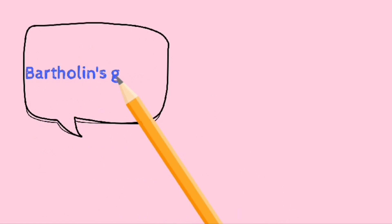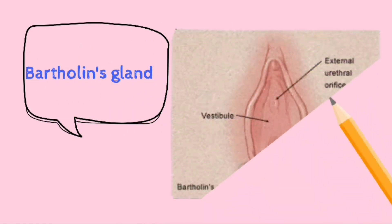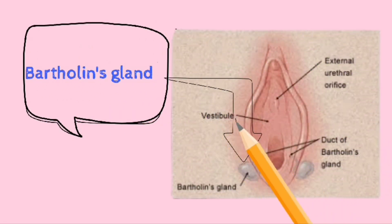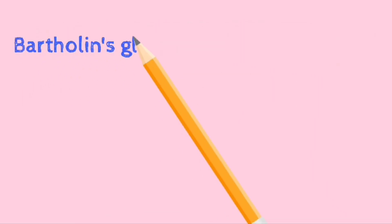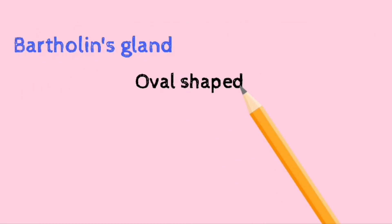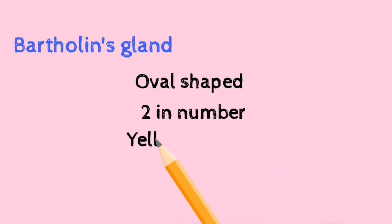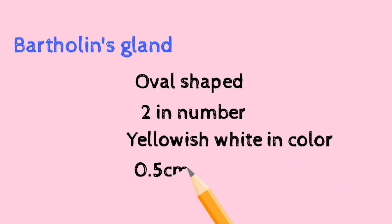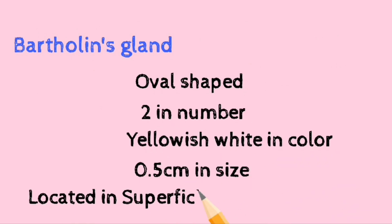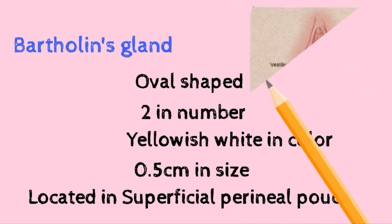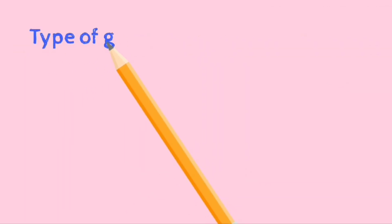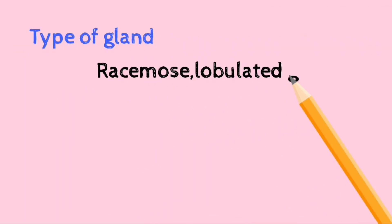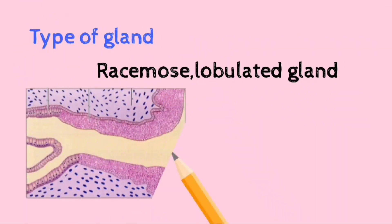Today's discussion topic is the Bartholin gland, one of the important glands present in the female external genitalia. It is oval in shape, two in number, yellowish-white in color, 0.5 centimeter in size, located in the superficial perineal pouch. This figure shows the location of the Bartholin gland.